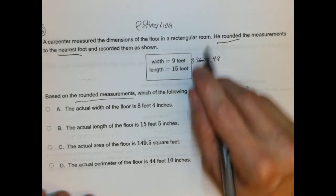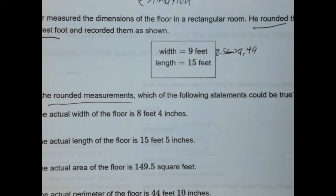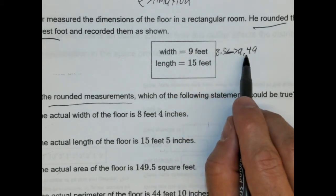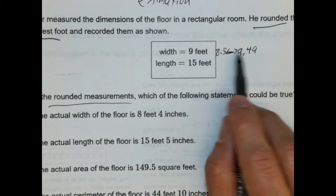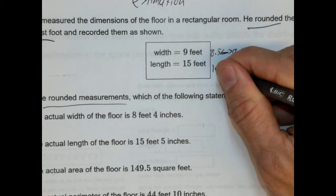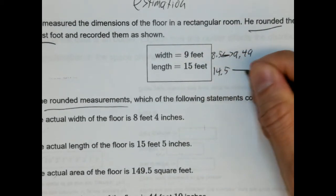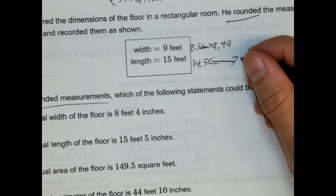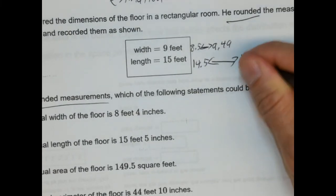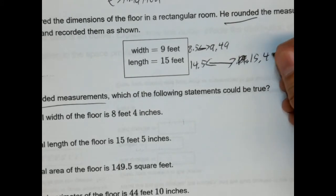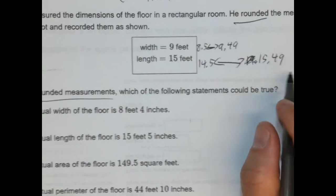If it's eight and a half, it would round up to nine. If it was nine point four nine, it would round down to nine. So, it's somewhere between those two values. Same thing here. We're going to have fourteen point five or fourteen and five tenths, and it could be as large as fifteen point four nine.